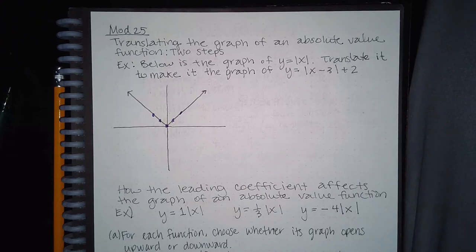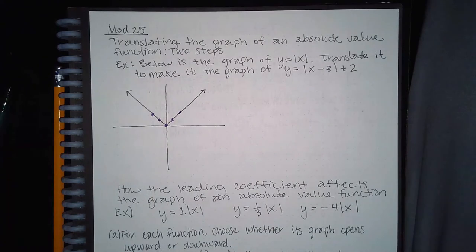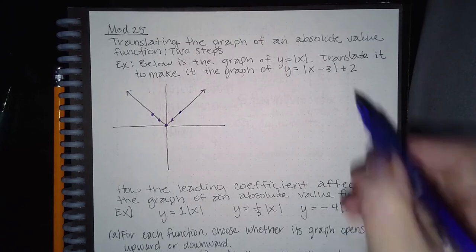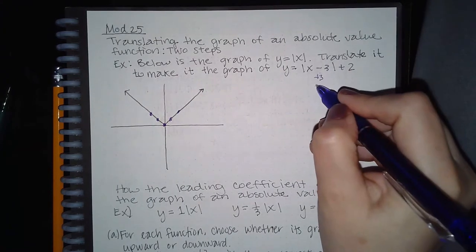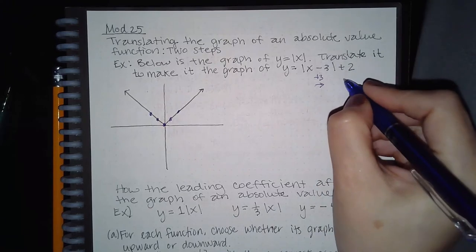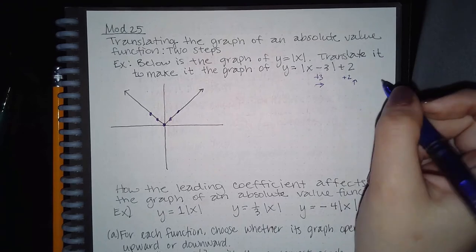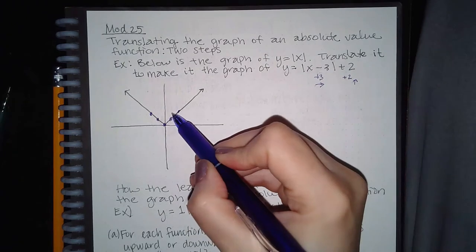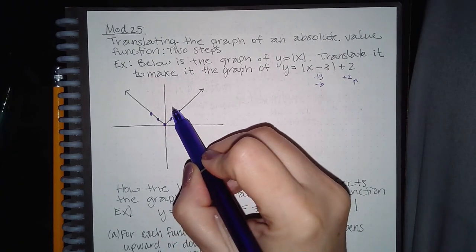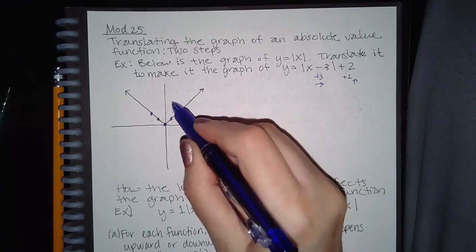Take the point (-2, 2). The translations we need to apply: we're going to add three to the x-values, which moves it to the right three, and add two to the y-values, which moves it up two. So take this x-value, move it over one, two, three, and then also move it up two — it'll be at about there.